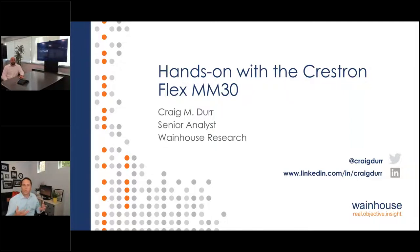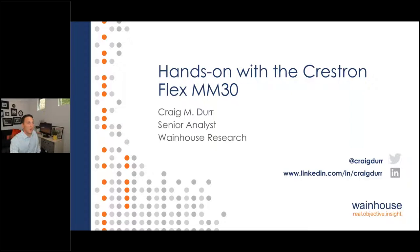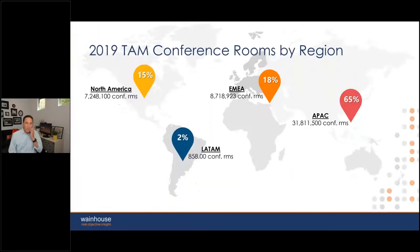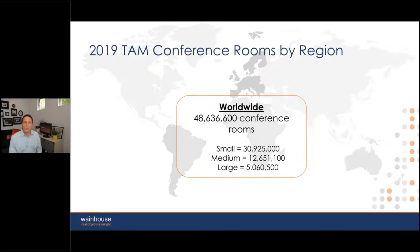I want to tell you my experience with the Crestron Flex MM. I want to give you some context, then talk about what I think is the right solution, and then hit some of the key things I found in the MM30. One of the things we recently did at Wainhouse was an in-depth analysis of the number of conference rooms in the world. We were very surprised by some interesting insights when we took the total number of conference rooms and cross-referenced it with the video installed base. There are somewhere in the neighborhood of 48 million conference rooms, and a large percentage — about 30 million — are the smaller spaces: about 15 by 15 feet, seating approximately four people.